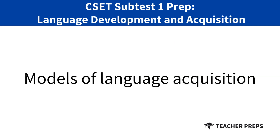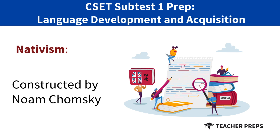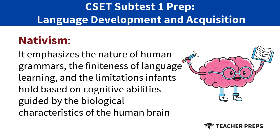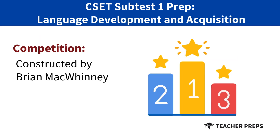Now let's discuss the models of language acquisition, beginning with nativism. This model is constructed by Noam Chomsky, and it emphasizes the nature of human grammar, language learning, and the limitations that infants hold based on cognitive abilities guided by the biological characteristics of the human brain.